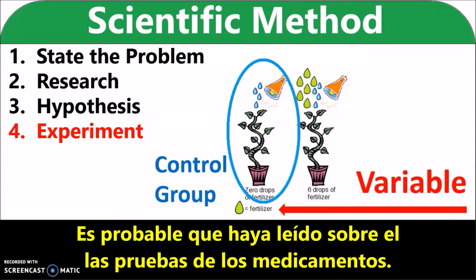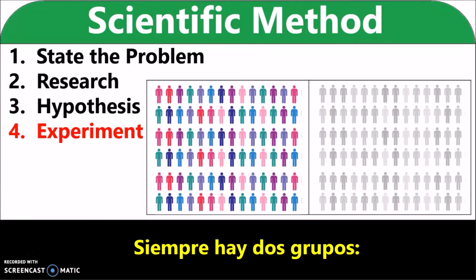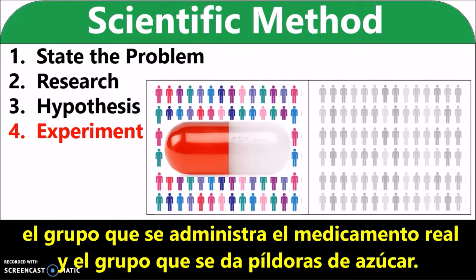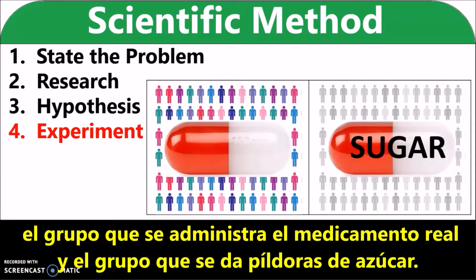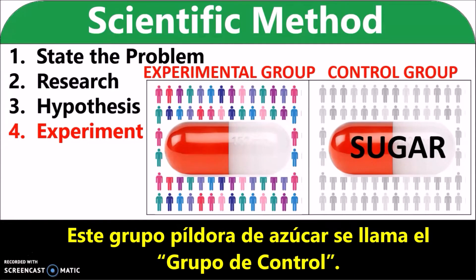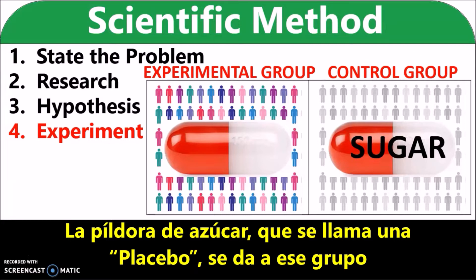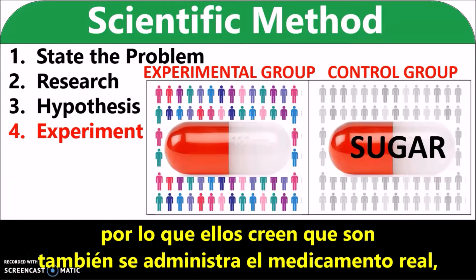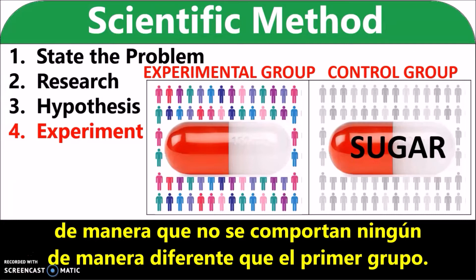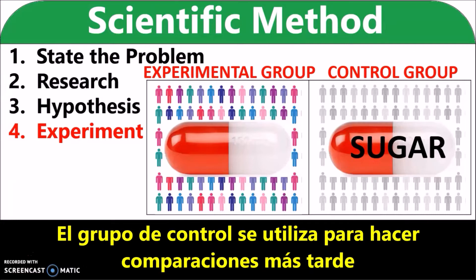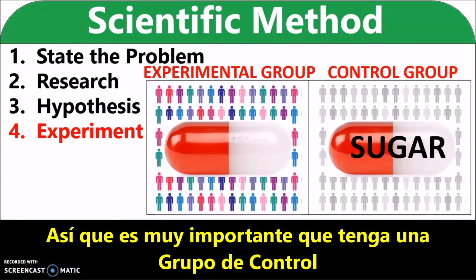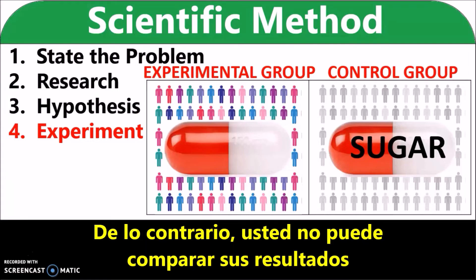You've probably read about the testing of medicines. There are always two groups: the group that is given the real medicine and the group that is given sugar pills. This sugar pill group is called the control group. The sugar pill, which is called a placebo, is given to that group so that they believe they are also being given the actual medicine, so that they don't behave any differently from the first group. The control group is used to make comparisons later, so it's very important that you have a control group, otherwise you can't compare your results.